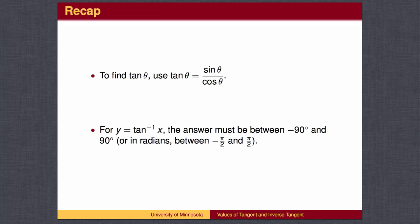To recap, values for the tangent function can be found by dividing sine by cosine. Values for the inverse tangent function will be found in the first quadrant for positive inputs, and in the fourth quadrant measured as negative angles for negative inputs.